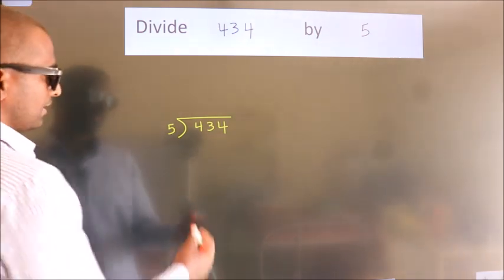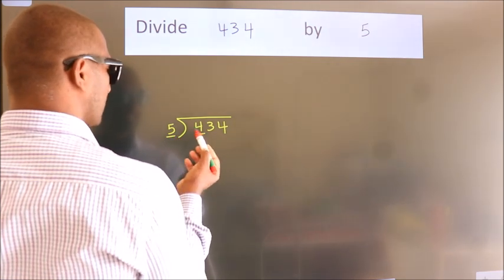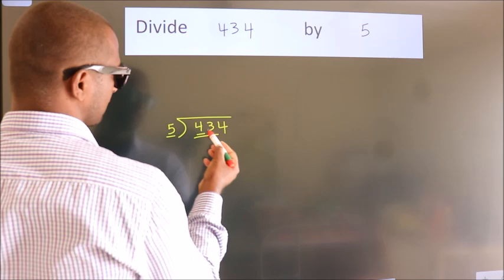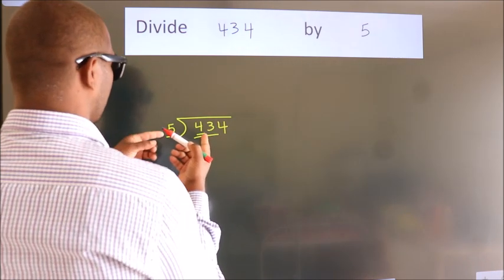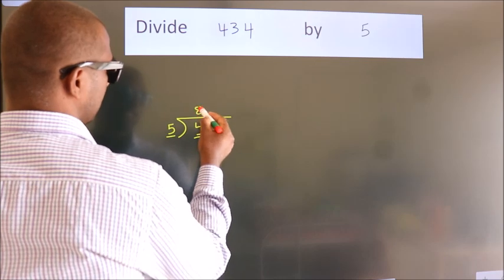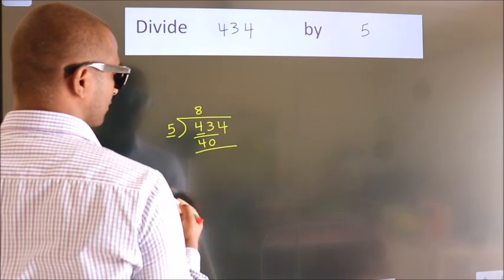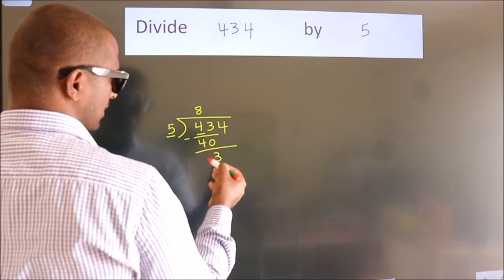Next, here we have 4. Here 5. 4 is smaller than 5, so we should take two numbers: 43. A number close to 43 in the 5 table is 5 times 8 equals 40. Now we should subtract. We get 3.